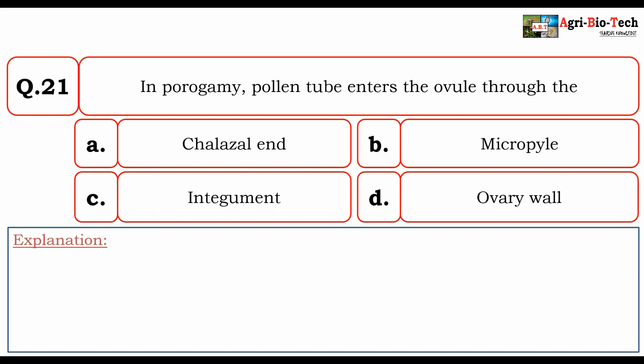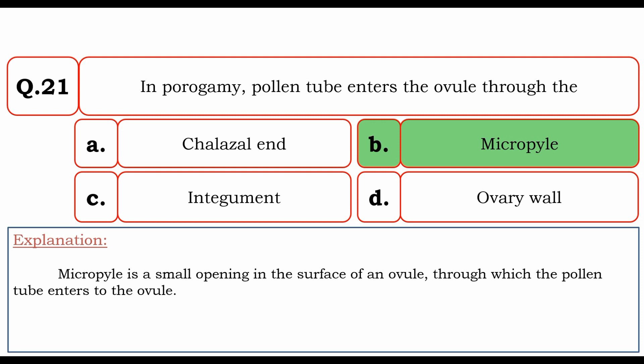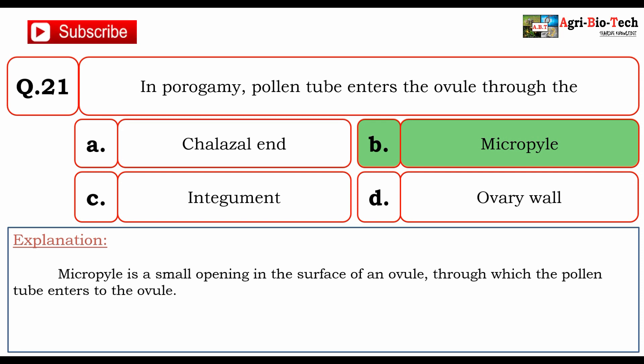In porogamy, the pollen tube enters the ovule through: A. chalazal end, B. micropyle, C. integument, D. ovary wall. The correct option is B. micropyle. Micropyle is a small opening in the surface of an ovule through which the pollen tube enters the ovule.